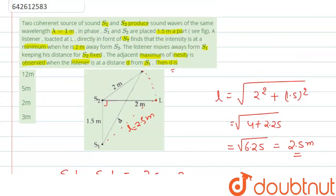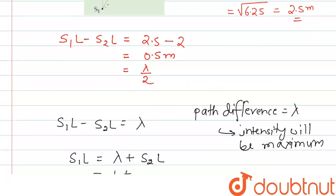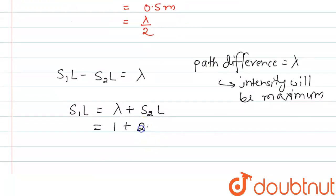fixed at 2 meters, so we can write 1 plus 2 equals 3 meters. This distance D, given in the figure, is 3 meters.